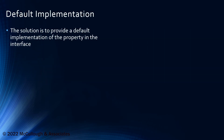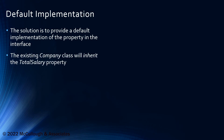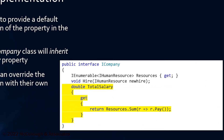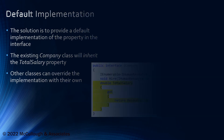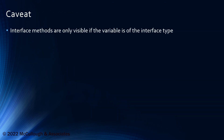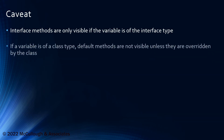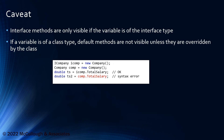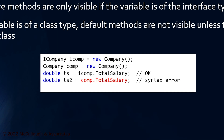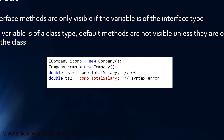The solution is to provide a default implementation of the property in the interface. The existing company class will then inherit the total salary property highlighted in yellow here. One caveat with default methods is that they are only visible when you're using a variable of the interface type. They are not visible if you're using a variable of the class type unless that method has been overridden by the class. So in the example, iComp can access the total salary property whereas comp cannot. Comp is a variable of type Company, and the total salary property is not exposed unless you're explicitly using the iCompany type variable — which you can do with a cast.